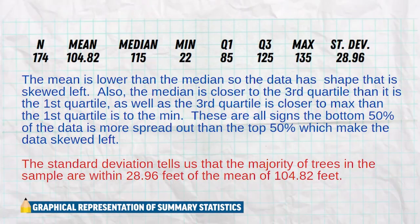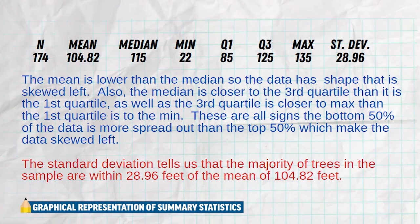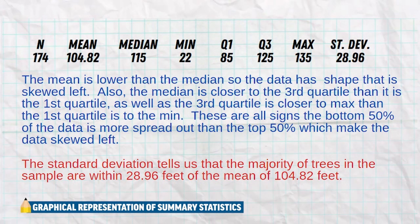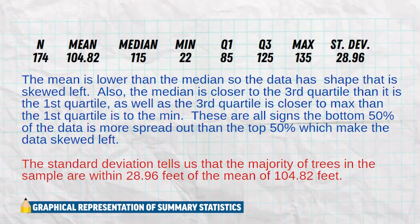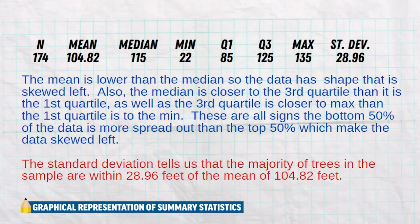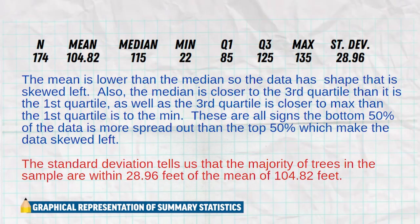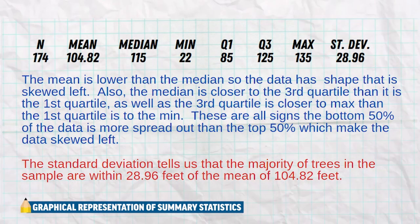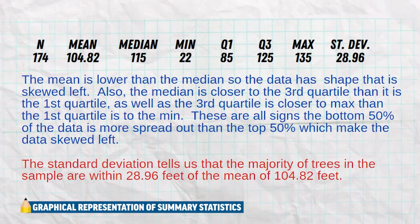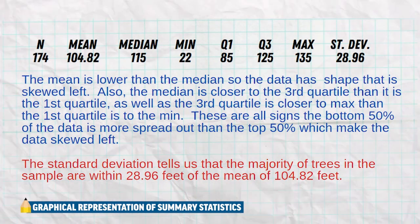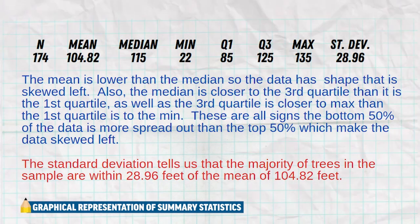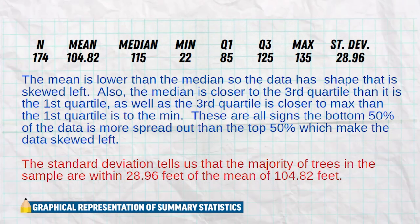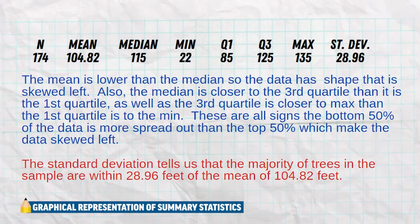Across the top, we see the summary statistics: the mean, the median, min, Q1, Q3, the max, and standard deviation. The first thing to notice is that the mean is lower than the median, so the data has a shape that is skewed left. Also, the median is closer to the third quartile than to the first quartile. Because there is more distance between the first quartile and the median does not mean there's more data — it just means that section of data is more spread out.